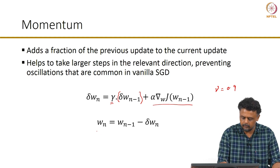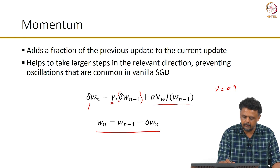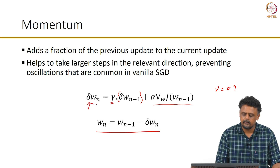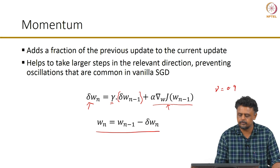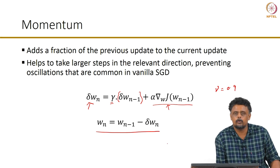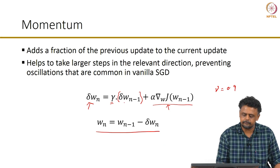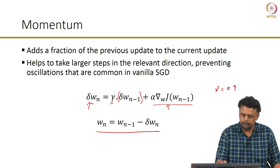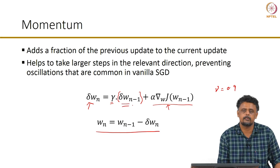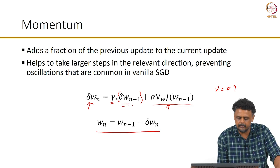This is how you actually update your parameters. Your current update has the usual update equation: alpha times the gradient with respect to the current value of the parameters W_{n-1}, and a fraction of the previous update is added to it. This is the momentum update equation.